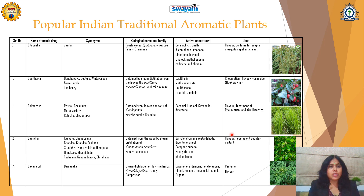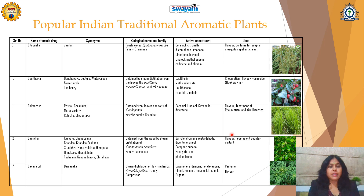Next is Gaultheria, which is called as Gandhapura or Wintergreen Sweet Birch. It is obtained from the leaves of Gaultheria fragrantissima, Family Ericaceae, which contains gaultherin and methyl salicylate as the main ingredients. Its oil is useful in rheumatism as a massage oil. It is also vermicidal, a flavorant, and an ingredient of various Ayurvedic balm products for cough, cold, and headache treatment.